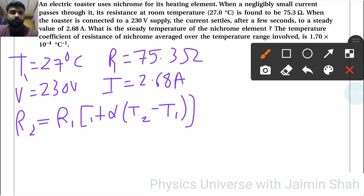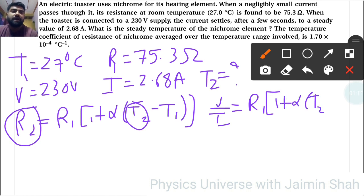First, we have to find T2. Now R2 is V/I, so V/I equals R1 times (1 plus alpha times (T2 minus T1)).